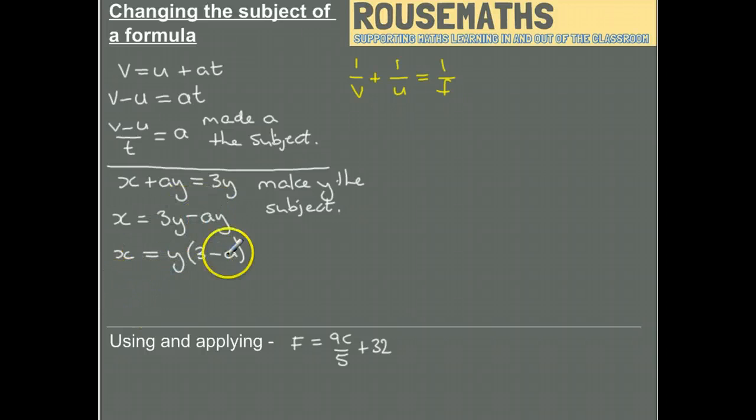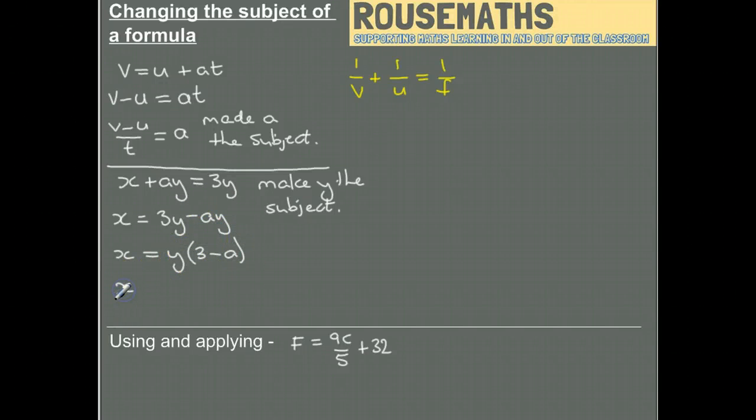y is being multiplied by this bracket, so I can just divide by that bracket and end up with y equals x over 3 minus a. And I have made y the subject.